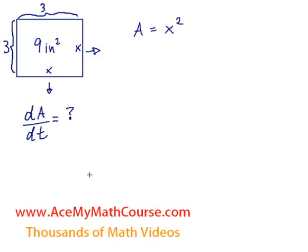At the moment when each side measures 5 inches each, so when x is equal to 5. And what is dx/dt? What is the rate of change of each side with respect to time? I mentioned it before.